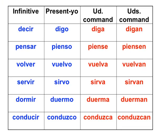Now please continue. Decir: digo — diga usted, digan ustedes. Pensar: remember the yo form is pienso, so you keep that stem change — piense usted, piensen ustedes. Likewise, volver and servir also stem change. Likewise, dormir stem changes.